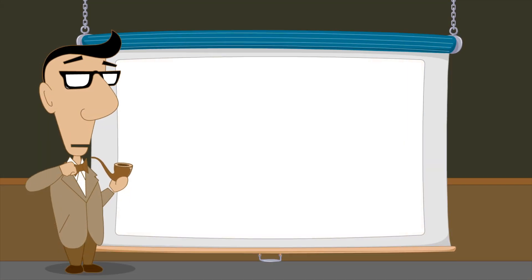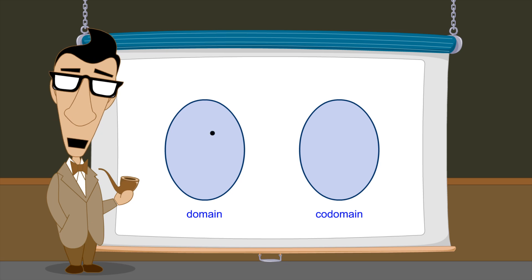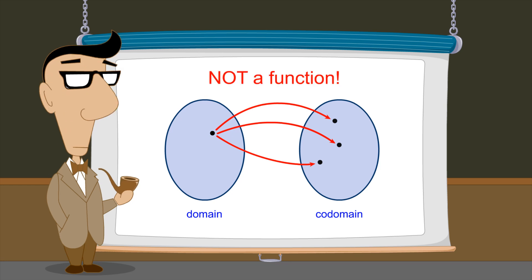We have seen that not every binary relation is a function. Although binary relations can associate a single domain element to multiple elements in the codomain, a function cannot. In the next lecture, we will introduce a simple graphical test to see whether a binary relation is a function.